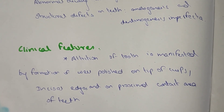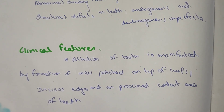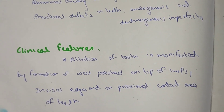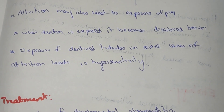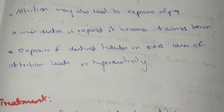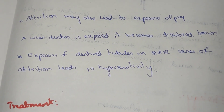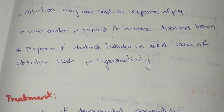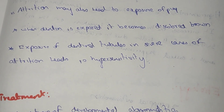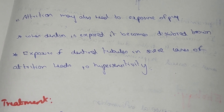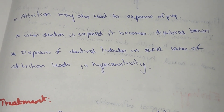Clinical features of attrition include the formation of a polish on the tips of cusps and the incisal edge, and wear of the proximal contact area of teeth. Attrition may also lead to exposure of the pulp. When dentin is exposed, it becomes discolored and, in severe cases, leads to hypersensitivity.